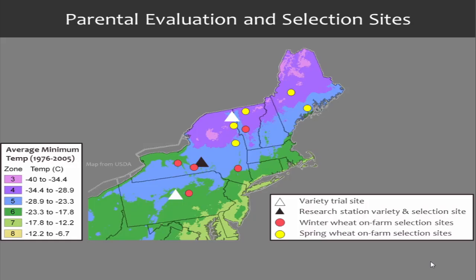Here is a geographic representation of how decentralized our program is. We work across a very wide climatic zone from Pennsylvania to Maine — parts of Pennsylvania and New York receive about 30 inches of precipitation while parts of Vermont and Maine receive 60 inches. There are also very large differences in minimum temperatures. We had three variety trial sites stretched along the environmental gradient to identify ideal parents, and eleven farmers participating in on-farm selection. Spring wheat is further north and winter wheat further south.